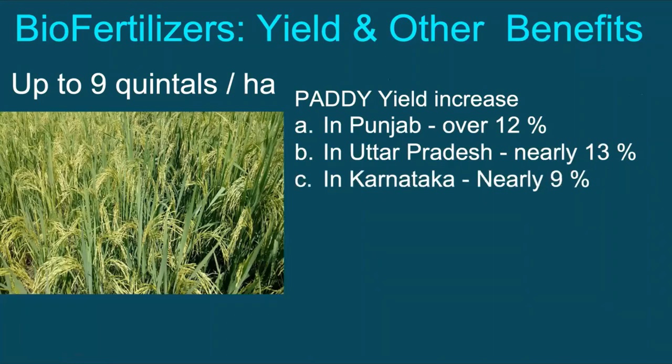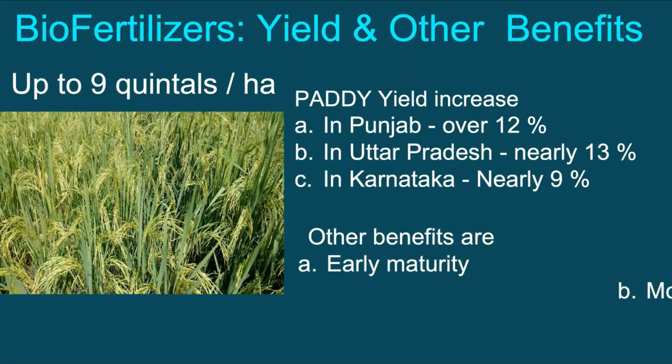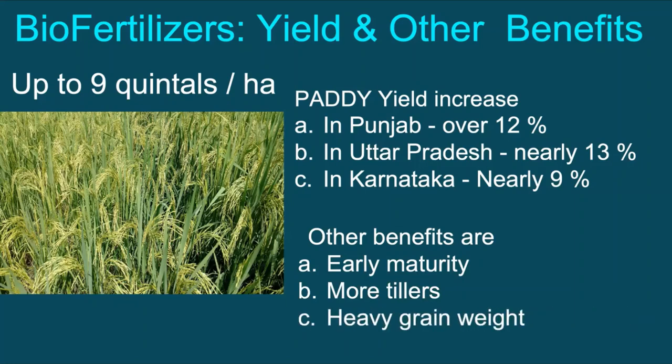In case of paddy, the yield increased over 12% in Punjab, nearly 13% in Uttar Pradesh, and nearly 9% in Karnataka. Other benefits observed are early maturity by 2 to 3 days, 10 to 20% increase in the number of tillers and effective tillers, and up to 10% increase in the average grain weight.